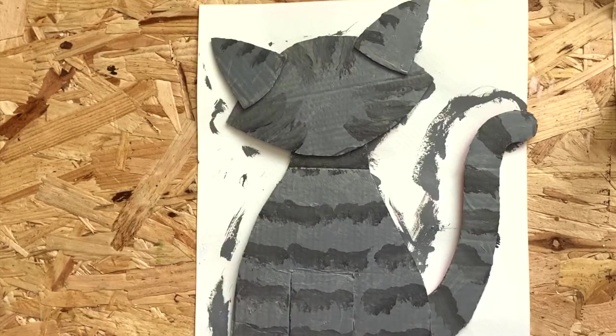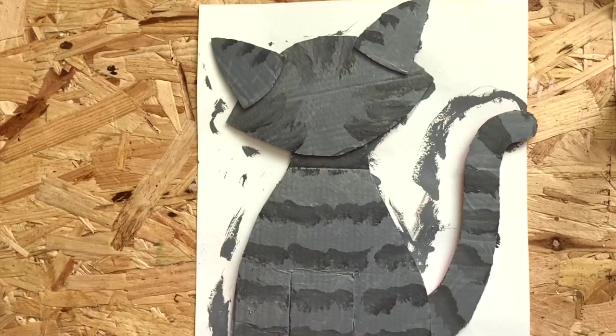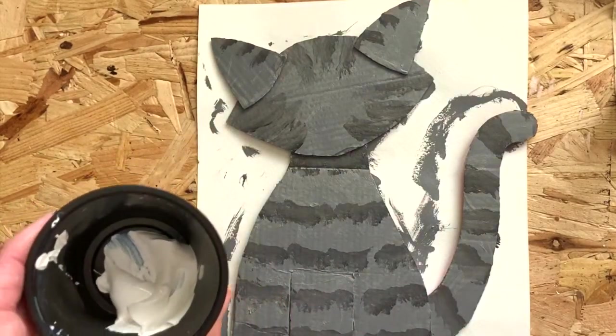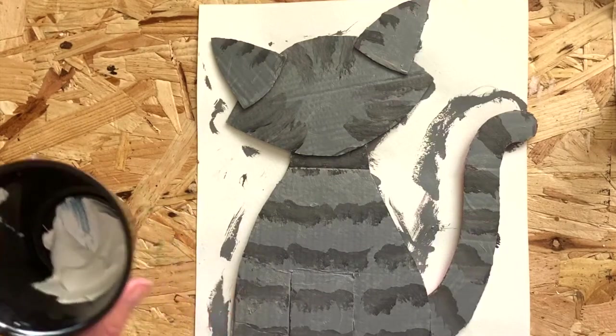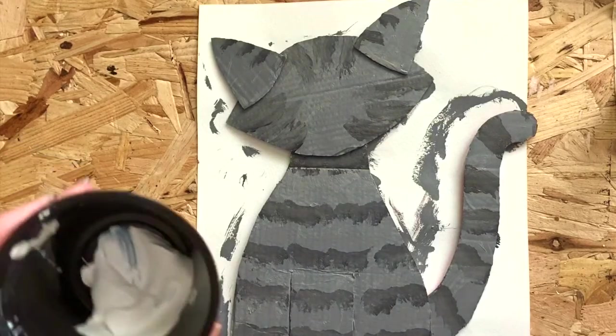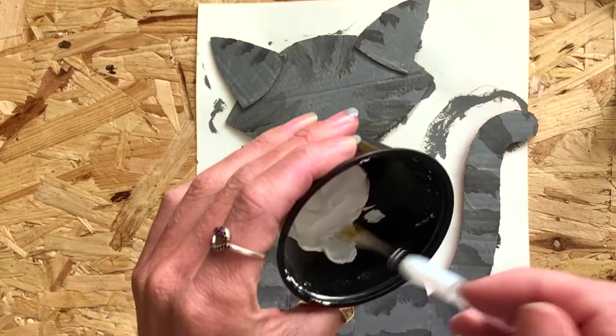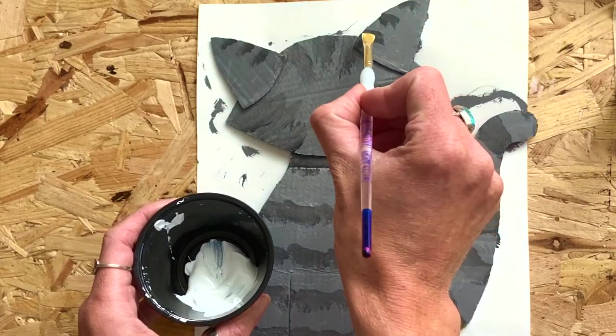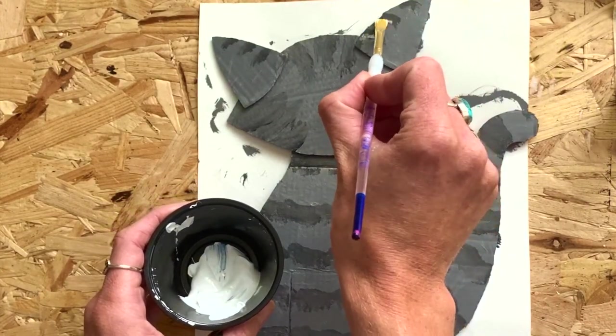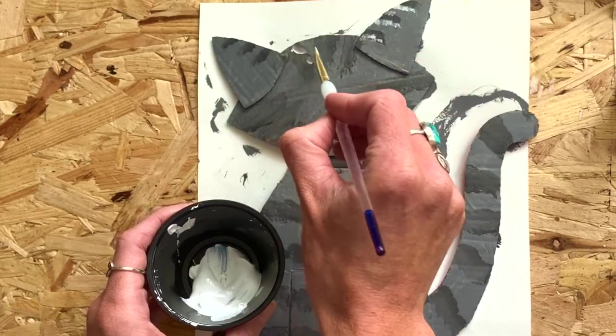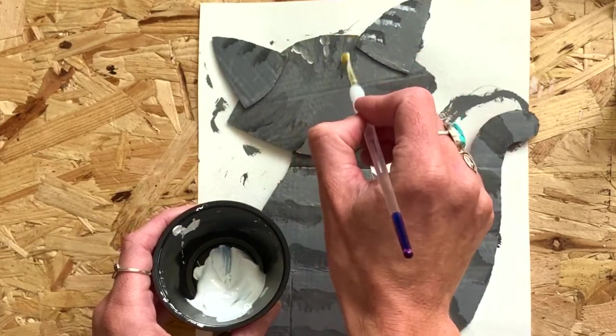Now we're going to add some little white flecks. These will be like white fur sticking through his grey fur. So take some white paint and preferably a thinner paintbrush. Just add some little white lines where you fancy. I did some on his ears, top of his head, his cheeks, and his tail.